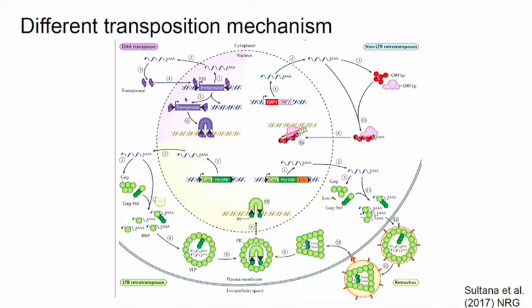Next, we have the long-terminal repeats, which produce several proteins like GAG and so on. They encapsulate the mRNA in a virus-like particle. Inside these virus-like particles, reverse transcription happens — you get double-stranded DNA — which then enters the nucleus and integrates into the genome.